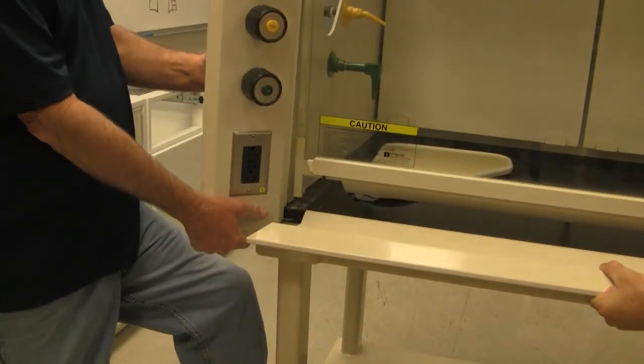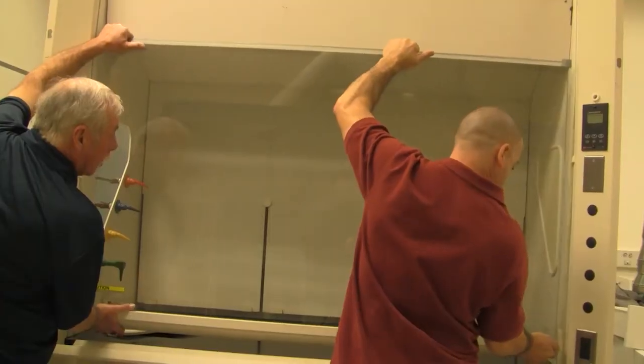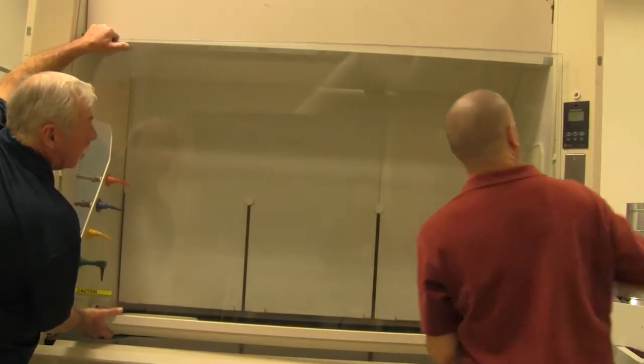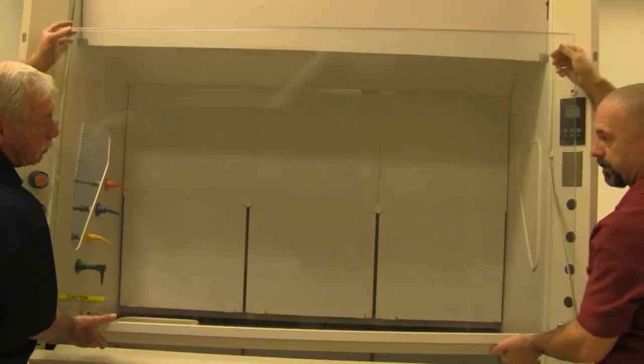If your hood is installed where you cannot spread the sides as shown, you must remove the sash by raising it above the hood to access the belt attachment points.